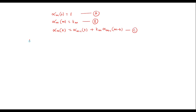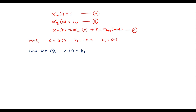In the given problem, m equal to 3, k1 equal to 0.65, k2 equal to minus 0.34, and k3 equal to 0.8. Substituting from equation (b): α_1(1) equal to k1 equal to 0.65. Similarly, α_2(2) equal to k2 equal to minus 0.34. And α_3(3) equal to k3 equal to 0.8.